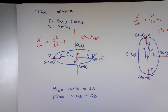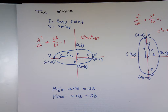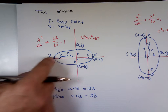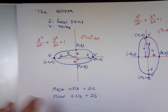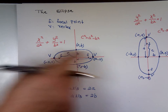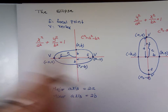C squared equals A squared minus B squared — what is that equation for? To find where the focal point is. So to graph an ellipse, you have to identify where the focal point is, tell me where the vertex is, how long each side goes, and then graph it.